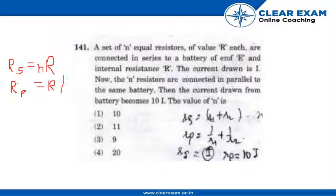Then the current I will equal to EMF by R_s plus r, that is internal resistance. So let's put the values.